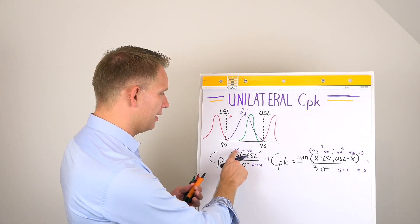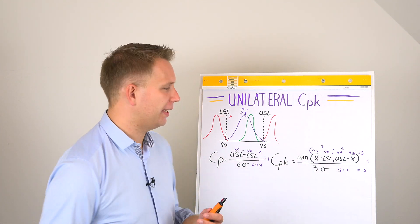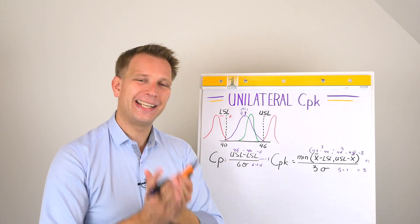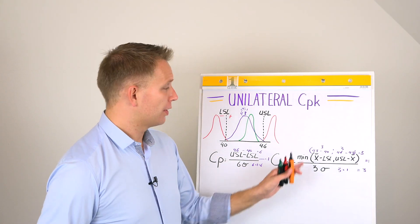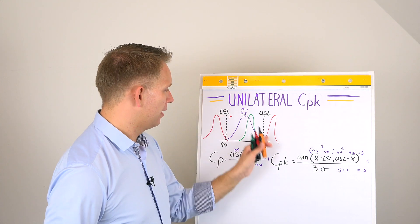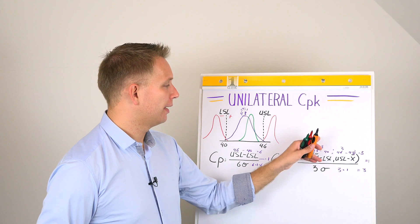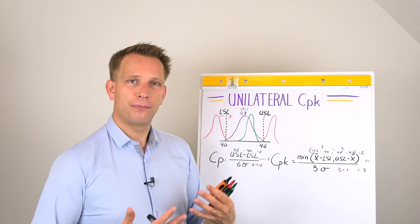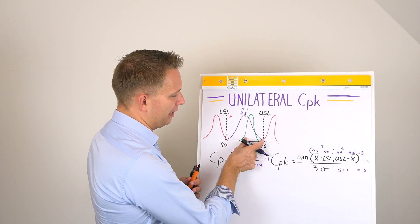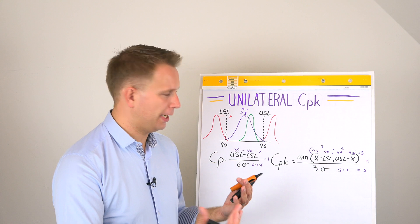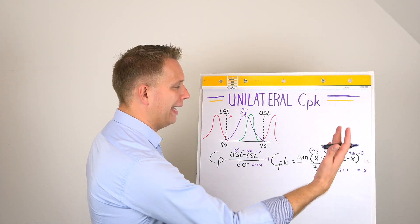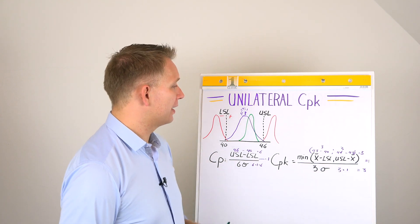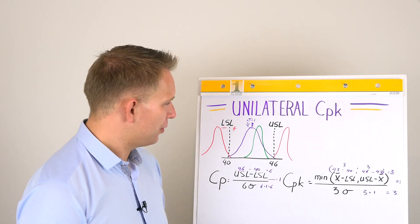What you see in these formulas is that we pick half of the specification tolerance. The ideal situation is that the mean is in the dead center between the spec limits. Basically this just divides everything by half, and below the divider we also take only half the number of sigmas — 3 sigma — because we ask: how easily can half of the bell curve fit into half of the specification limits? When nicely centered, you get the same result.